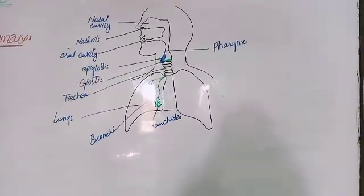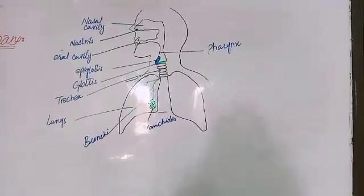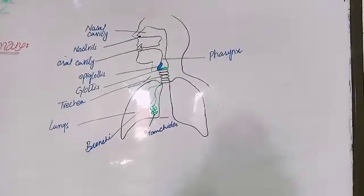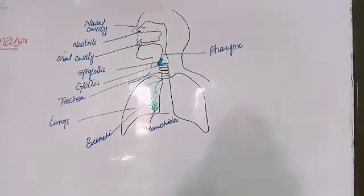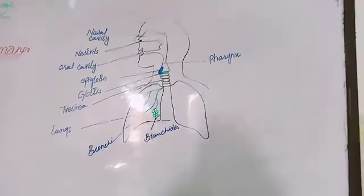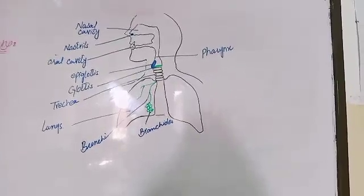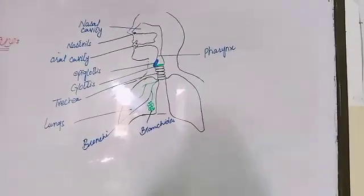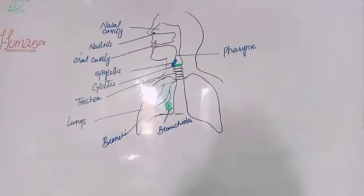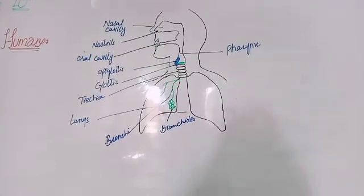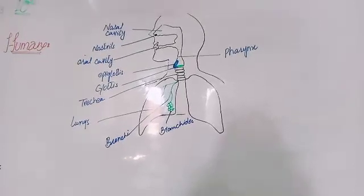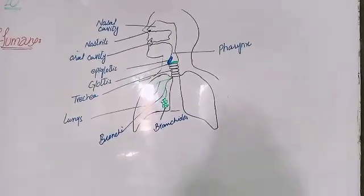Inside the nostrils of the nose, the nasal cavity opens into the pharynx. Now, the pharynx is a muscular organ. The pharynx is a part which is common for food and air.